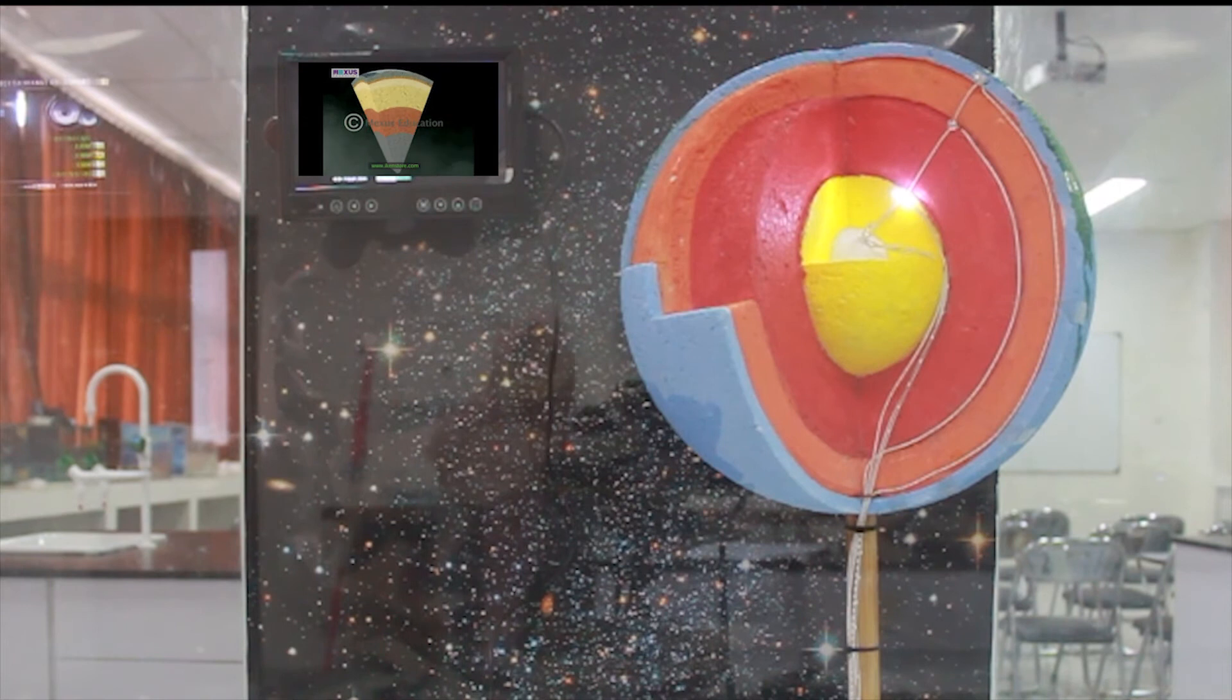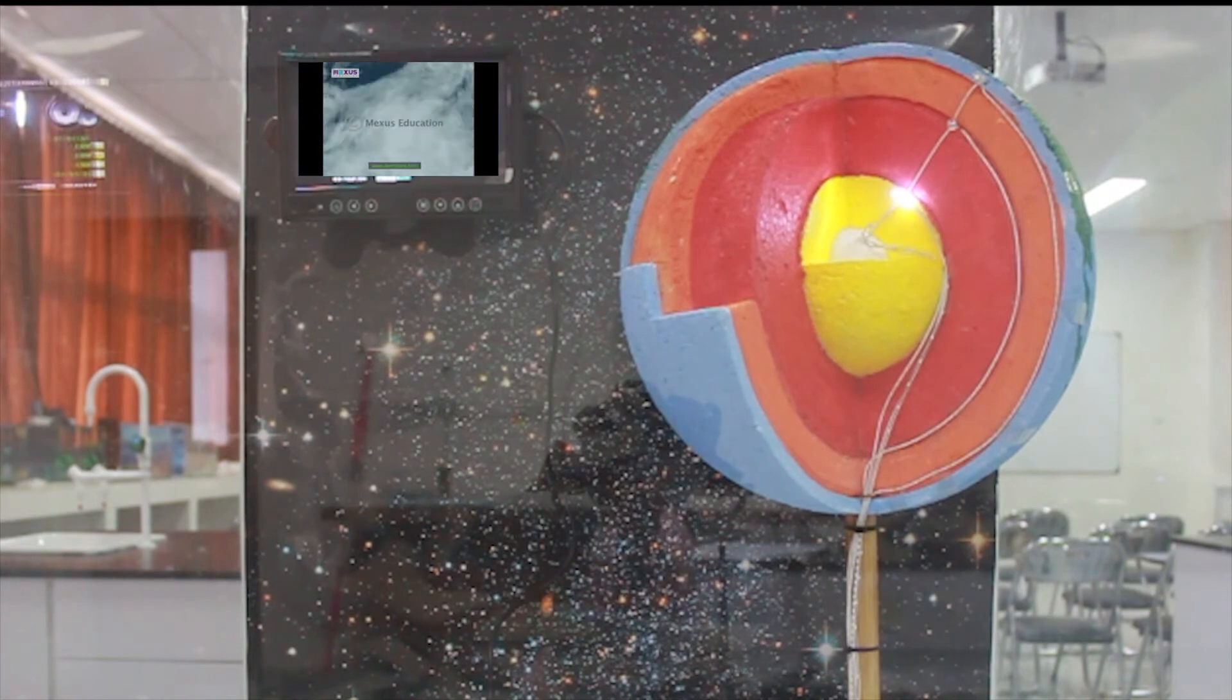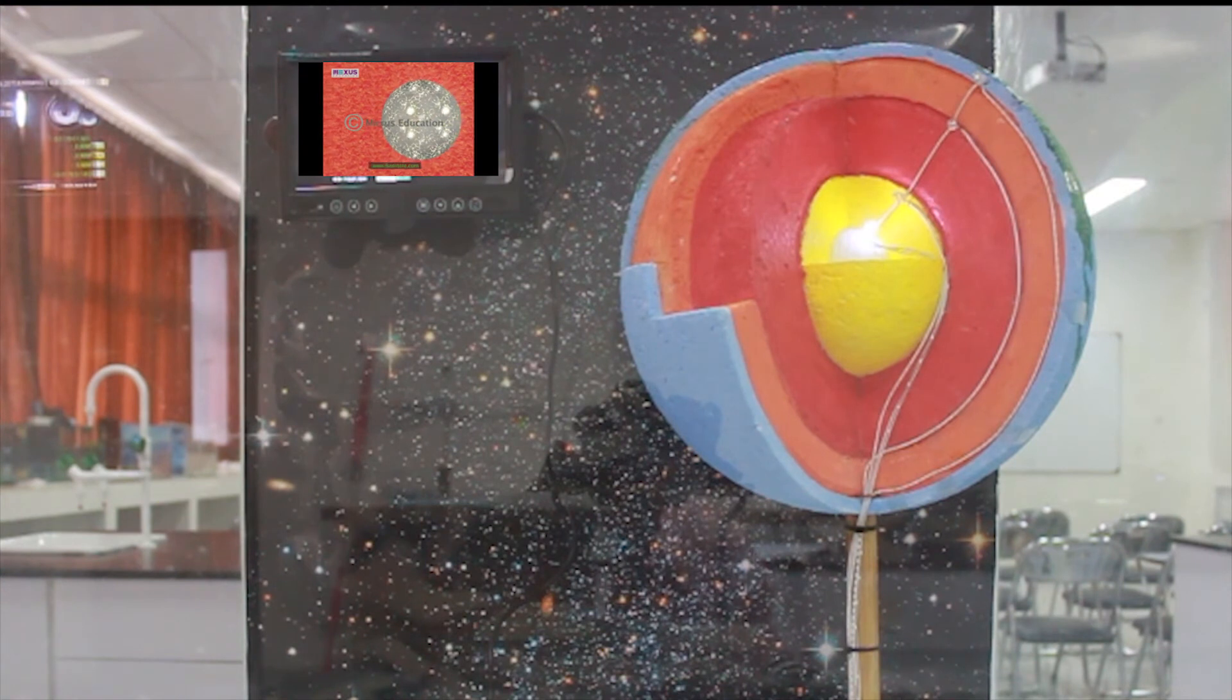The core mantle boundary is located at 2,900 kilometers below the surface of the Earth. Now come to the innermost of the Earth, the inner core.